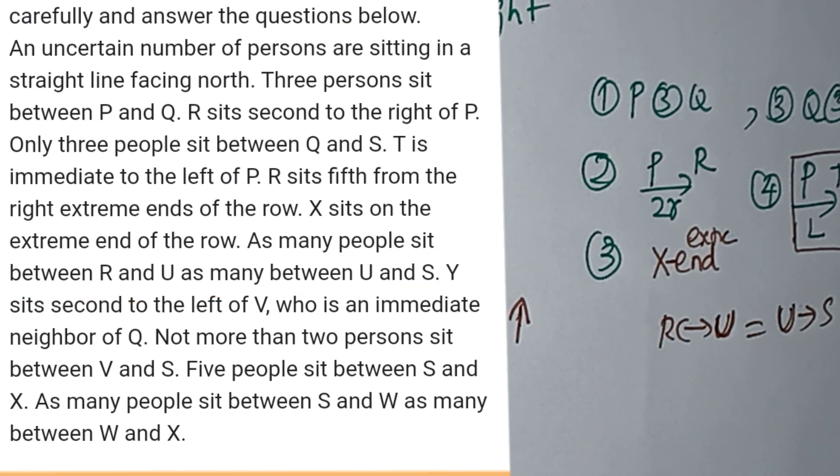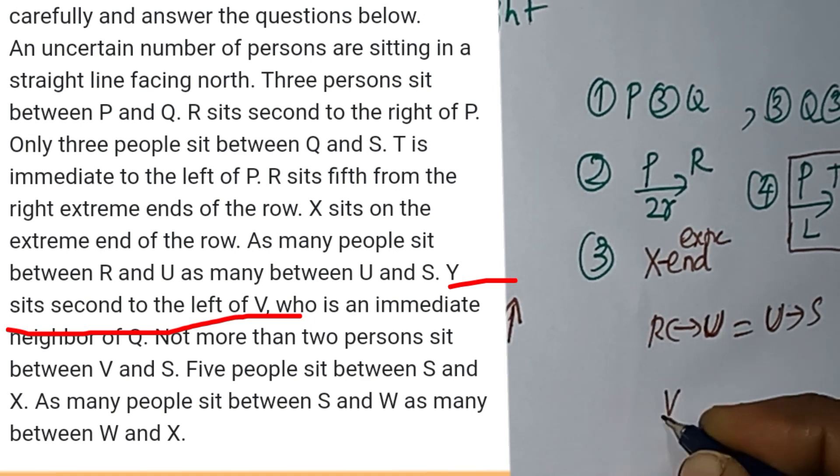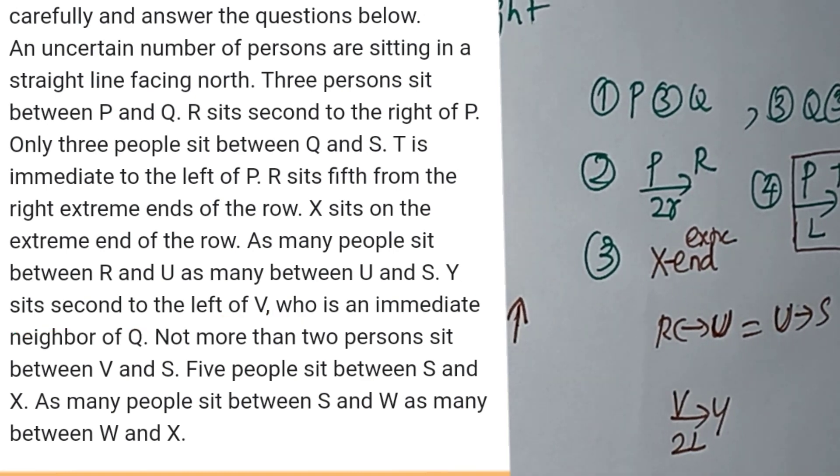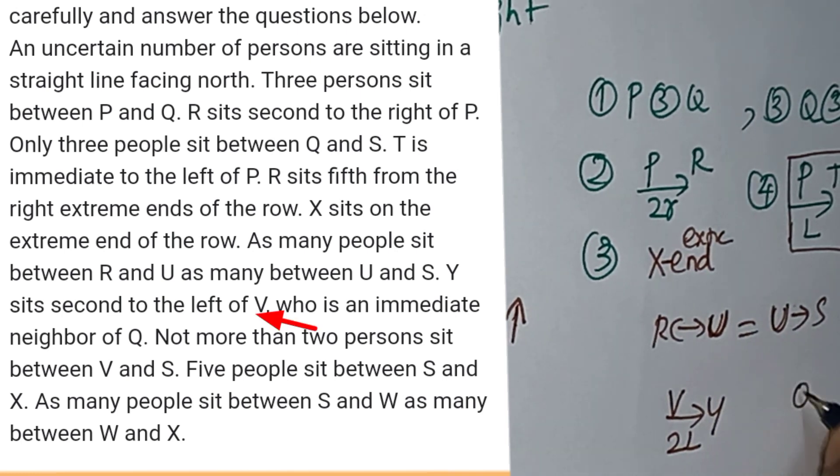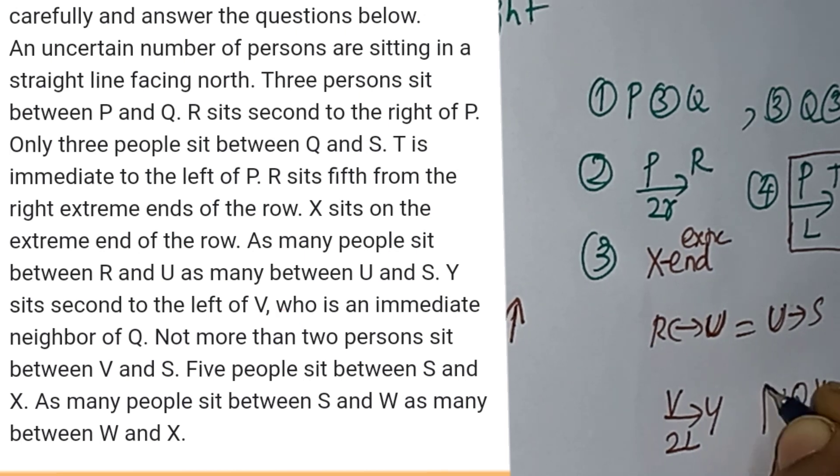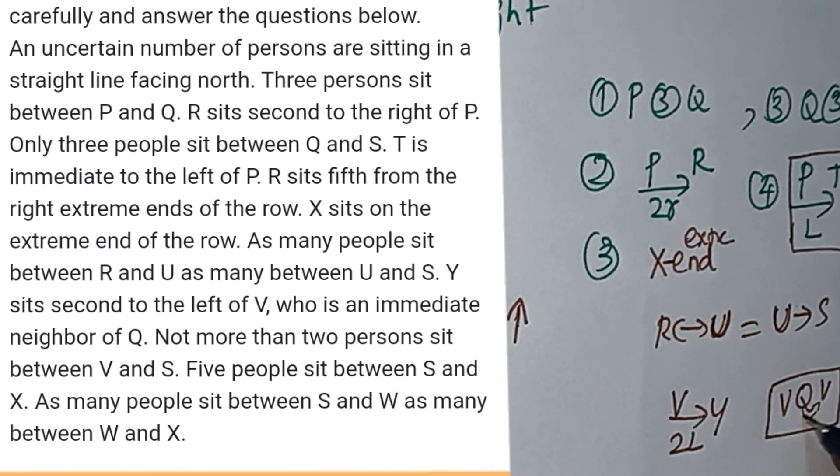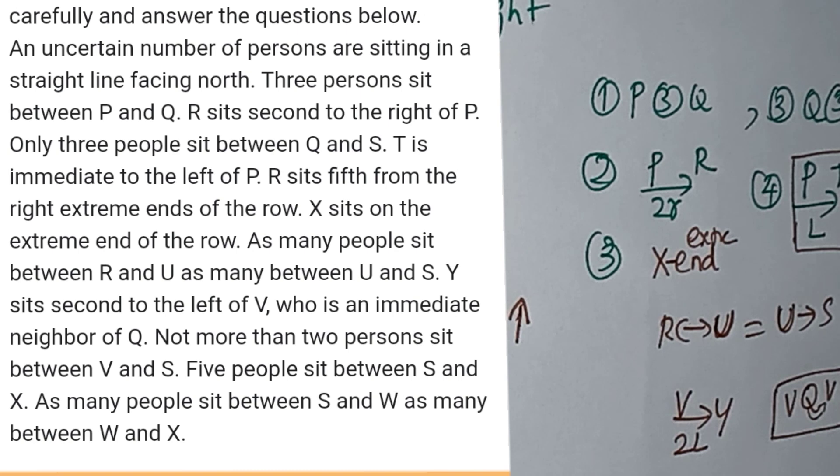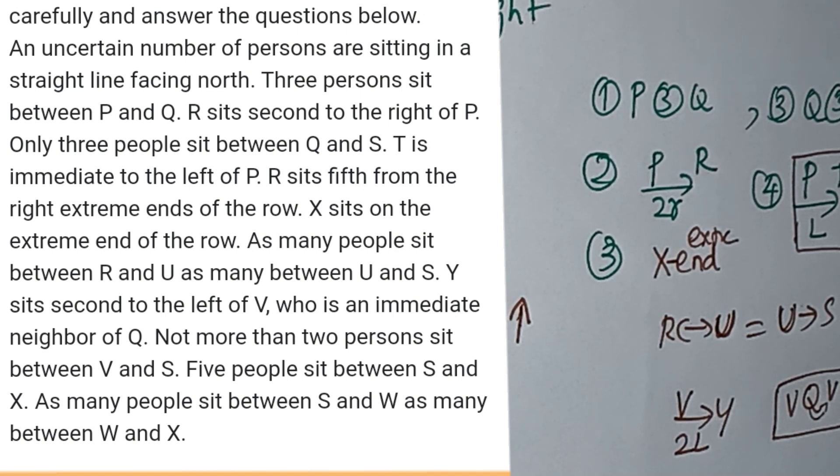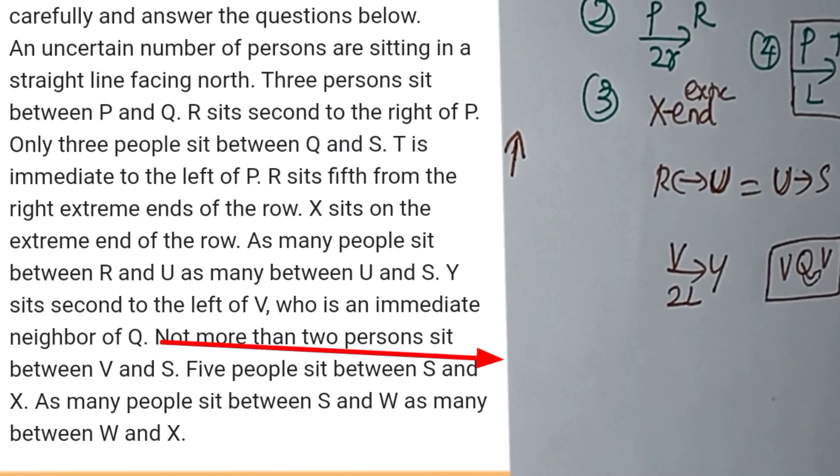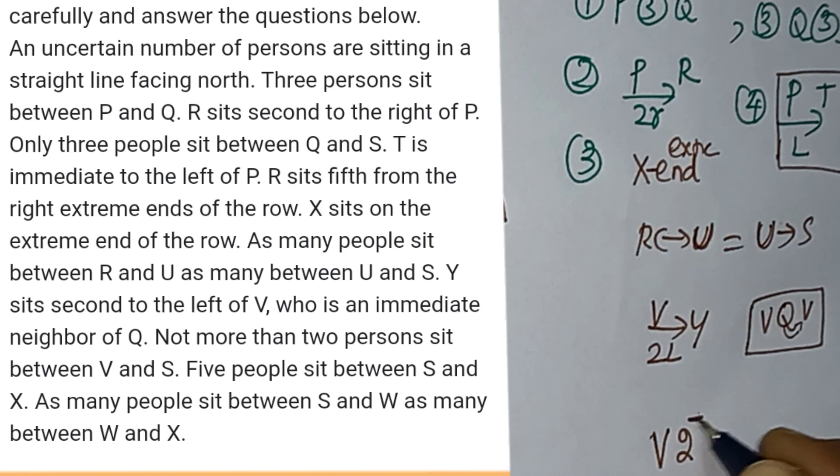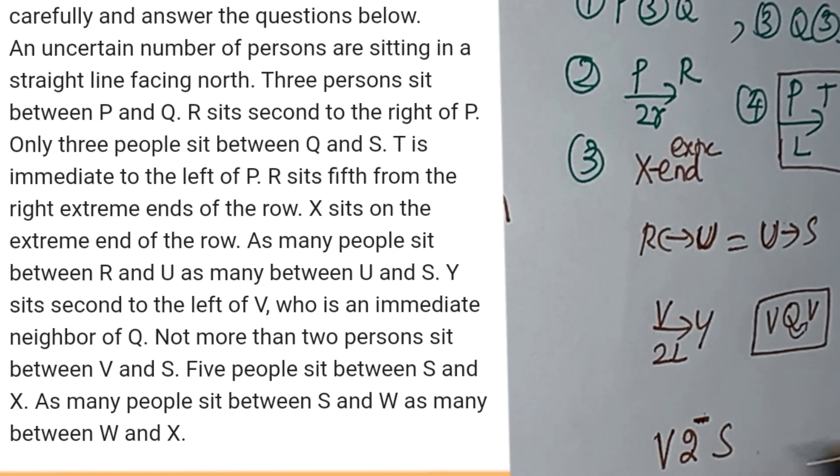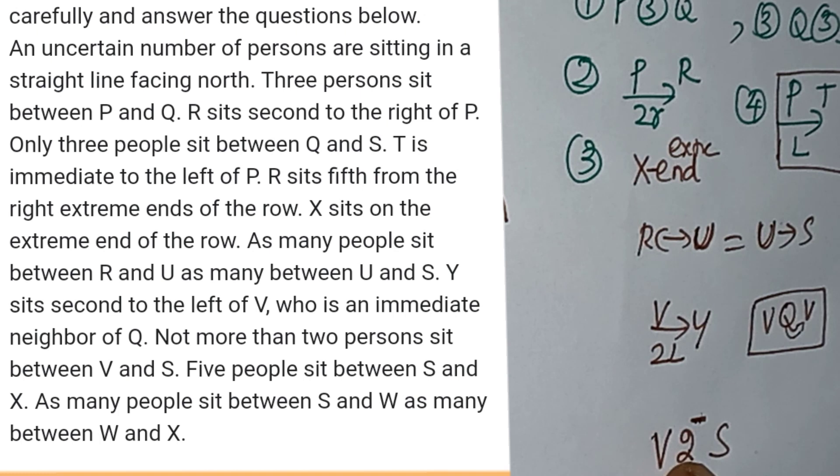Y sits second to the left of V. If Y is second to the left of V, then U is second to the left of Y. Not more than two persons between V and S. Maximum is two people. Two people or smaller than two. V or S - one person or two persons between them.